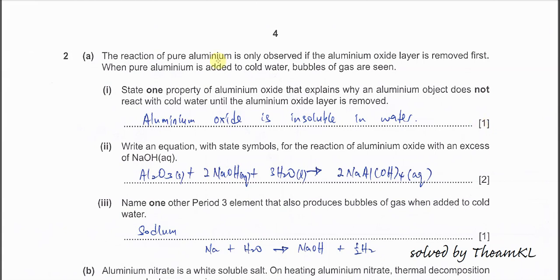Question 2a. The reaction of pure aluminum is only observed when the oxide layer is removed, and the aluminum will react with cold water and bubbles of gas are seen. Hydrogen gas. Part 1.